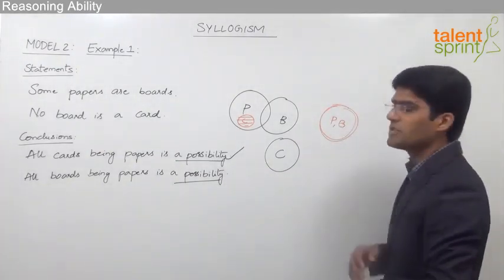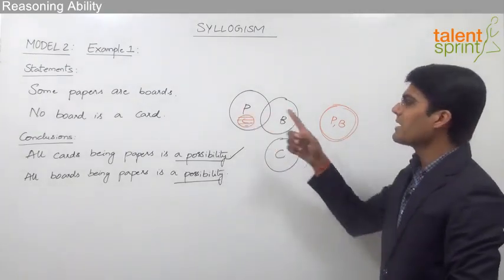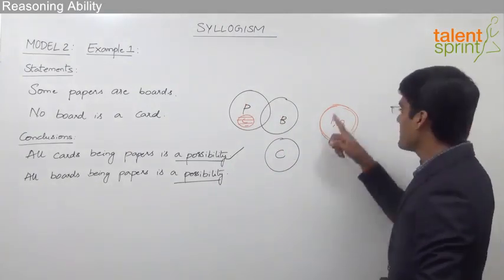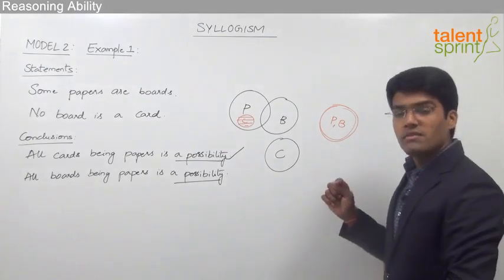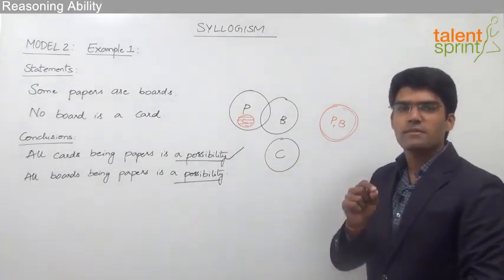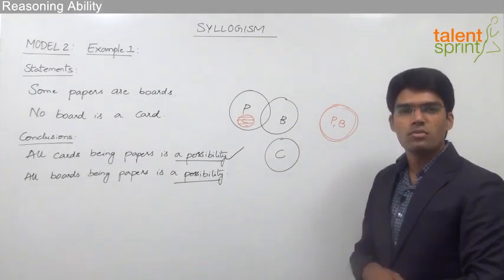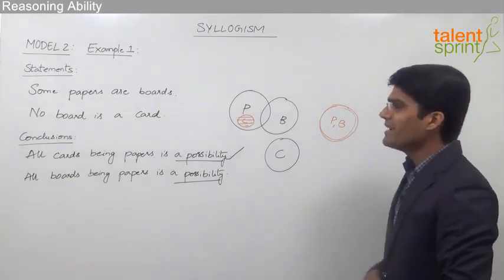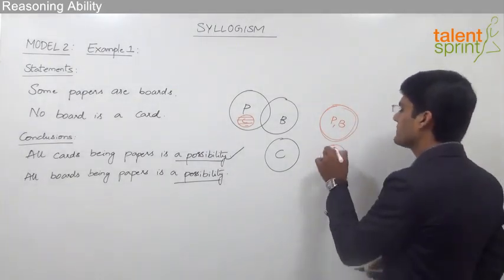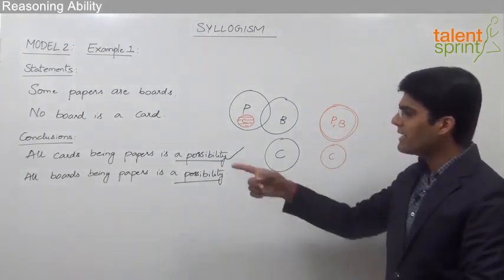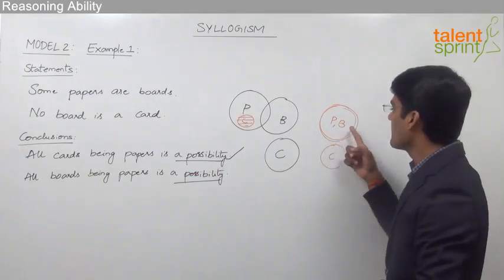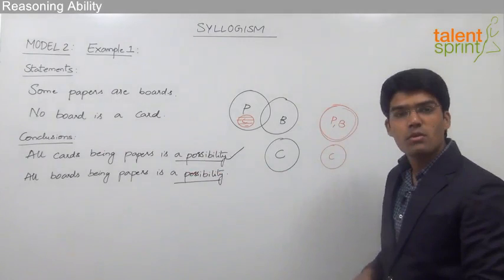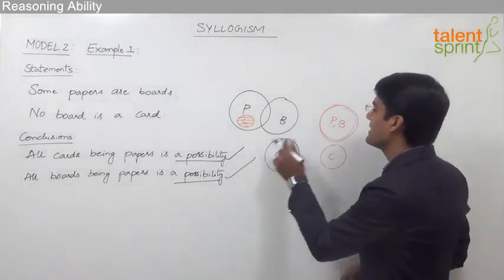We have learned that the second diagram possible for some A are B is where all A's are B's, meaning all the papers are boards represented by the same circle. The point to recollect is that 'some' starts from at least one and goes up to all, so instead of saying some papers are boards we can say all the papers are boards. The second statement is no board is a card, so no board is a card. Looking at this diagram, all boards being papers is possible because all the boards are papers. So conclusion number 2 is also true because it follows this diagram.